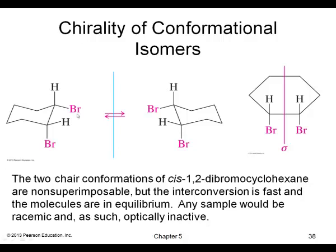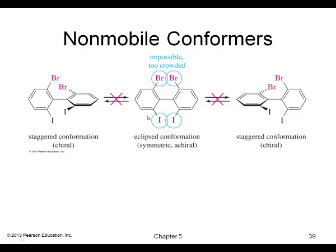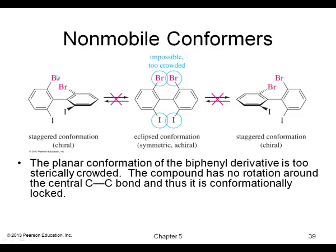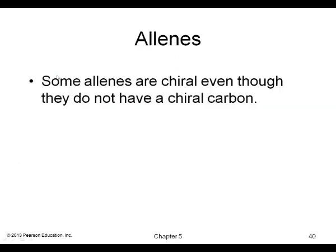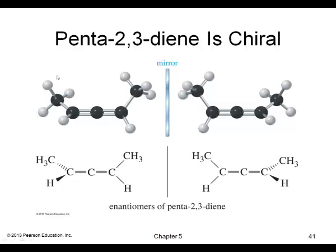Here's the chair conformation of cis-1,2-dibromocyclohexane. The interconversion is so fast that the molecules are in equilibrium, so even though the two molecules are enantiomers, they are present in equal amounts and are optically inactive. Preventing that interconversion — for example with a trans-cyclic system — makes the two molecules chiral and unable to interconvert. Similarly, allene, even without a chiral carbon, is chiral because its mirror image is non-superimposable, and the two forms cannot interconvert.